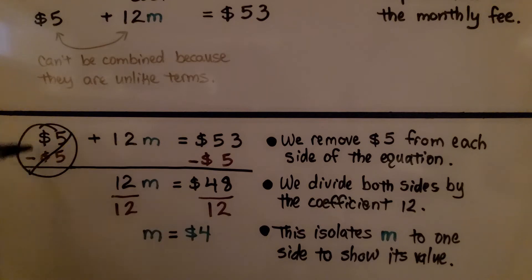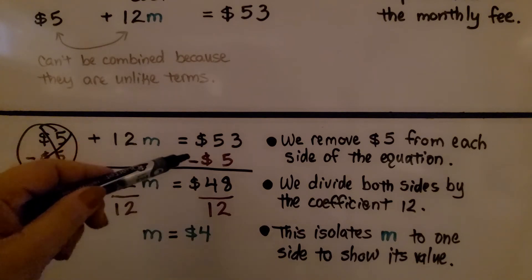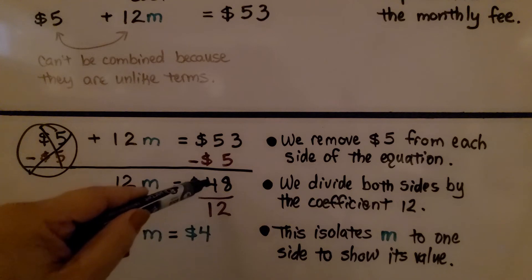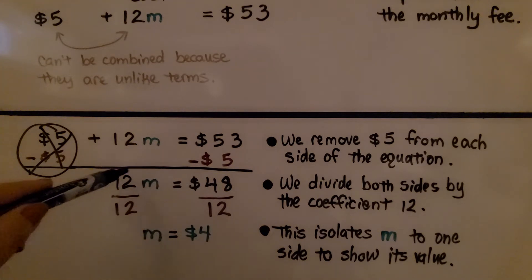If we have a positive $5 here and a negative $5, that's going to create a zero pair and eliminate this. And we're going to take away $5 from the 53 and get $48. Now we have 12M equals $48.